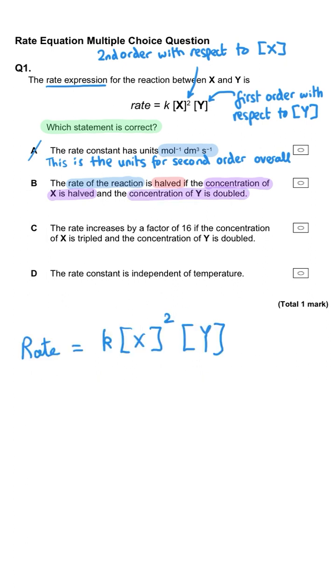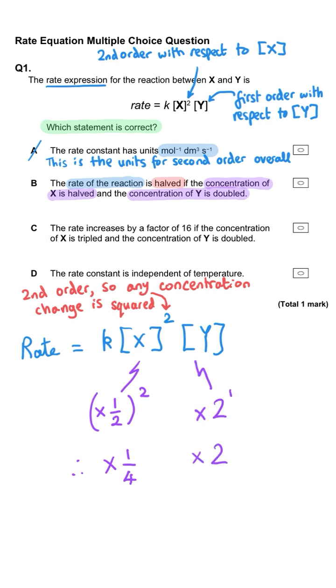Well, since X is second order, halving it will actually make the reaction four times smaller, and doubling Y, because it's first order, will make the reaction twice as fast. So that doubling and that quartering does result in half the original rate of the reaction. So B is correct.